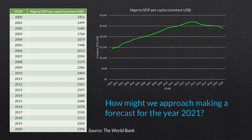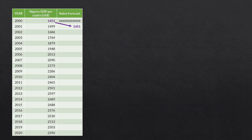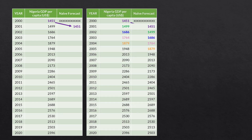We're learning about different forecast accuracy measures as they relate to the naive forecast. The naive forecast is just the entire time series shifted forward in time by one time period. In this case, we just take the actual value from the previous year, and that becomes the forecast for the next year. Everything just slides forward one time period.